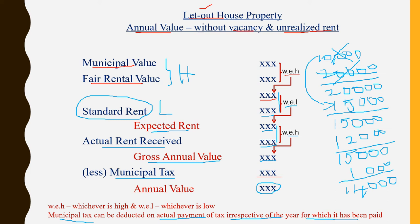To summarize the key points for calculating annual value of a let out property: compare four values — municipal value, fair rental value, standard rent, and actual rent. You cannot change this order. When comparing with standard rent, take the least value; when comparing with other values, take the highest value. If a value is not given, skip it and compare with the next. If only municipal value and actual rent are given, compare them and take whichever is higher.